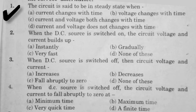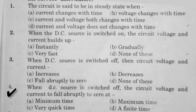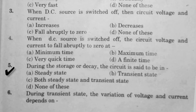The circuit is said to be in steady state — option D is right. When the DC source is switched on, the circuit voltage and current builds up — option B is right. When DC source is switched off, then circuit voltage and current — option C is right. When DC source is switched off, the circuit voltage and current fall abruptly to zero — option D is correct. During the storage or decay, the circuit is said to be in transient state — option B is right.